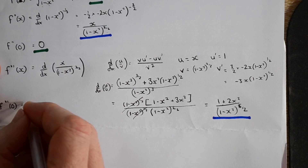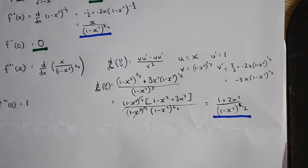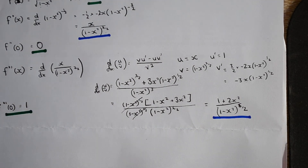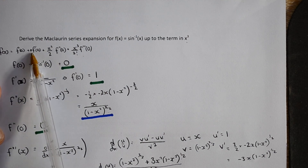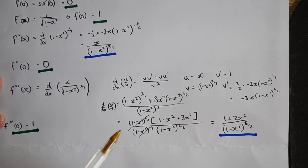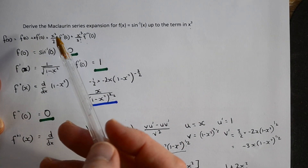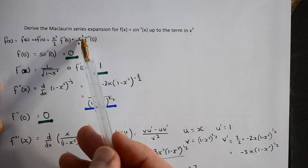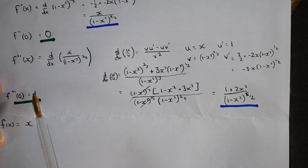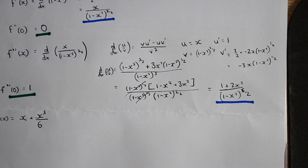We've now worked out all our coefficients — the ones highlighted in green are what we're interested in. The first term is f(0) which is zero, so we can ignore that. The coefficient of x is one, giving just one lot of x. The second derivative at zero is zero, so the x squared term disappears. The third derivative is one, so the x cubed term is 1 times x cubed over 3 factorial. That gives us plus x cubed over 6, and there we have our final answer: arcsin(x) ≈ x + x³/6.